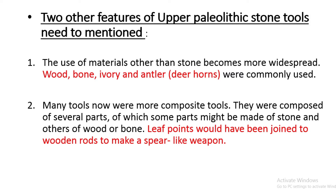Tools were also made more composite, meaning their different parts were made from different materials. For example, a leaf point would be joined to a wooden rod to make a spear-like weapon.